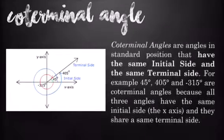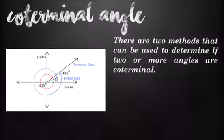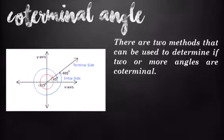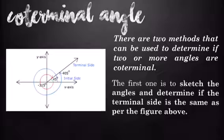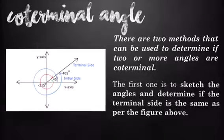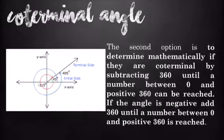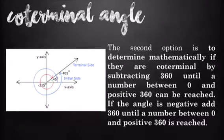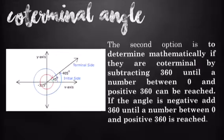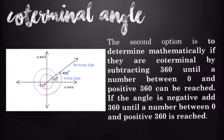There are two methods that can be used to determine if two or more angles are coterminal. The first one is to sketch the angle and determine if the terminal side is the same. The second option is to determine mathematically if they are coterminal by subtracting 360 until a number between 0 and positive 360 can be reached.